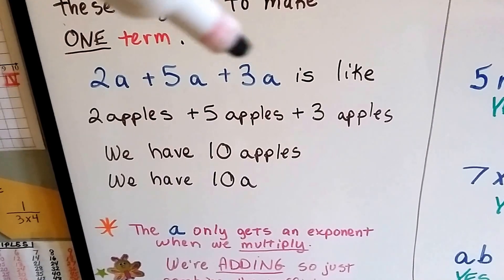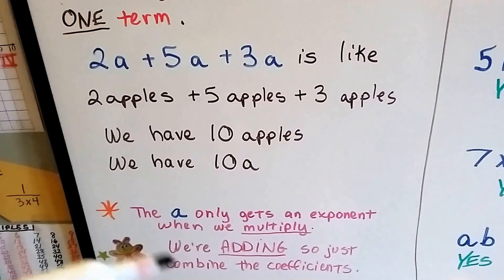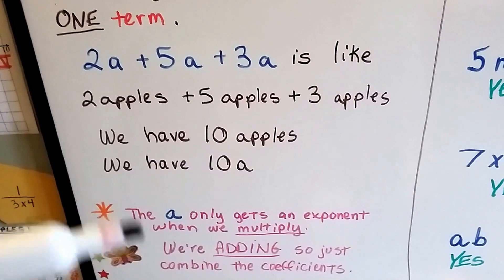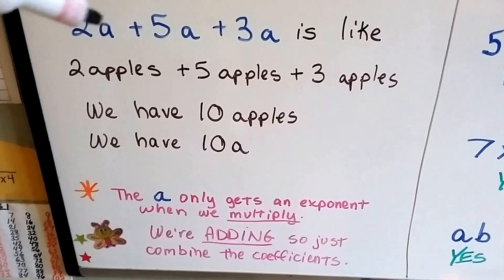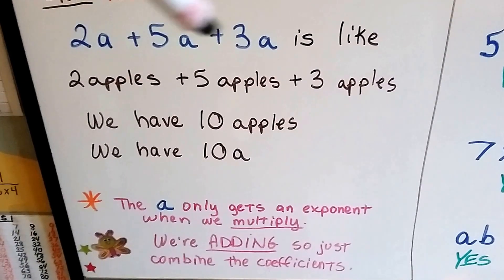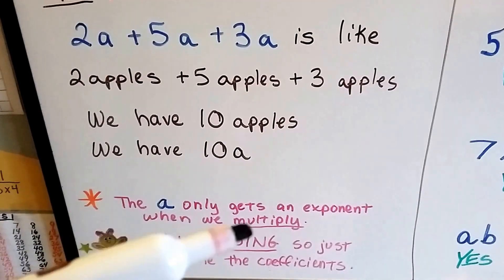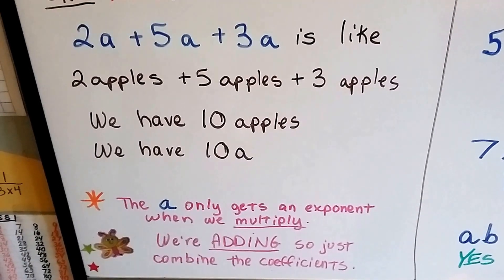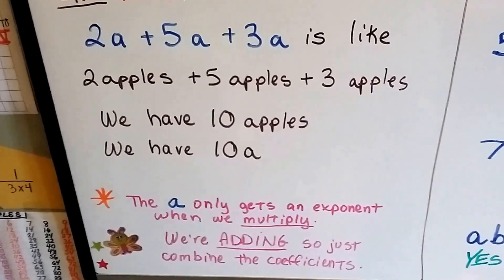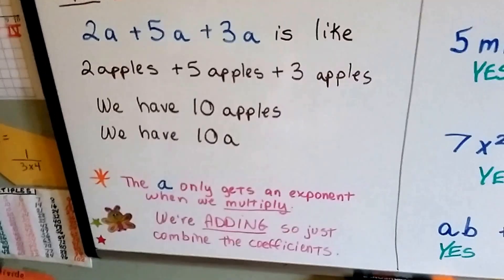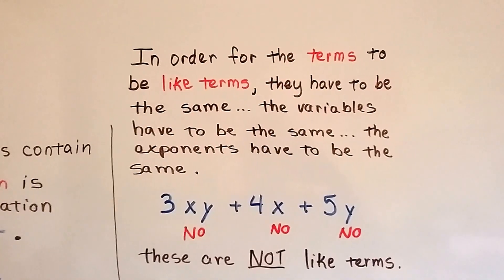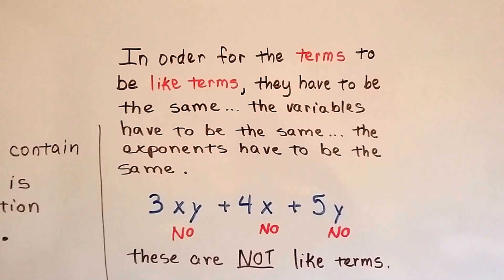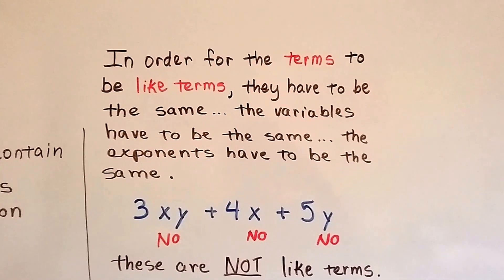The only time we would use exponents is if we're multiplying. When we're adding, we just combine the coefficients. When you're adding these, the variables go along for the ride. When you're multiplying them, then we'll worry about exponents — we're going to talk about that coming up. Right now, we just let the variables go for the ride. In order for terms to be like terms, they have to be the same — the variables have to be the same and the exponents have to be the same.